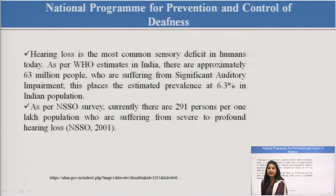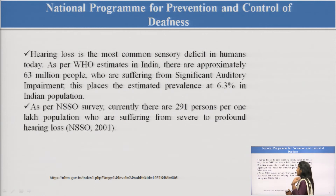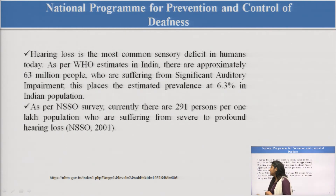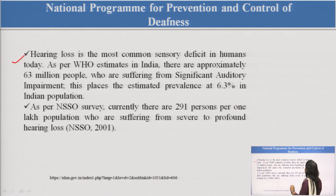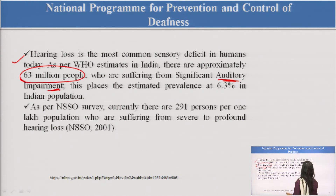This is all about IDSP. In conclusion, the program is for data management — collecting data on diseases, finding disease trends, and controlling diseases. Now there is another program called NPPCD — National Program for Prevention and Control of Deafness. Before discussing this program, let us look at some statistics. Hearing loss is the most common sensory deficit in humans today. As per WHO estimates, in India approximately 63 million people are suffering from auditory impairment, accounting for nearly 6.3 percent of the Indian population.